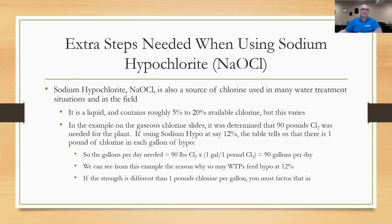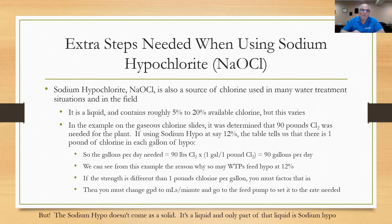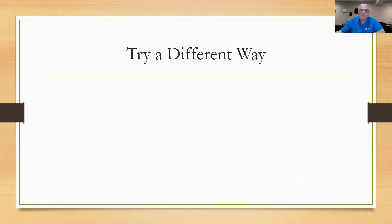If the strength is different than one pound per gallon of chlorine, you must factor that in. You also have to convert gallons per day to milliliters per minute and go to the feed pump to set it for the rate needed, then make rounds to verify you're actually getting what you planned to put in. Sodium hypo doesn't come as a solid — it's a liquid and only part of it is the sodium hypo. So here are the calculations we need to work with, and I'm suggesting we try a different approach at this point.